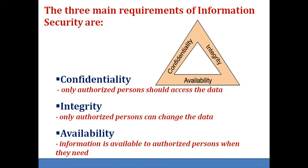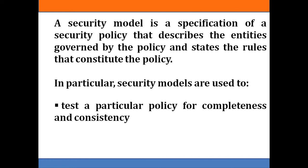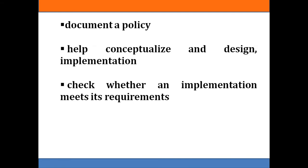These three requirements are essential and what we call this is the CIA triangle. A security architecture model is a statement that outlines the requirements necessary to properly support and implement a certain security policy. In security architecture, the design principles are reported clearly and in depth. Security control specifications are generally documented as independent documents. System architecture can be considered a design that includes a structure and addresses the connection between the components of that structure. A security model provides a deeper explanation of how a computer operating system should be developed to properly support a specific security policy. A security architecture model helps in conceptualizing the design and implementation, and also checks whether the implementation meets all the requirements.